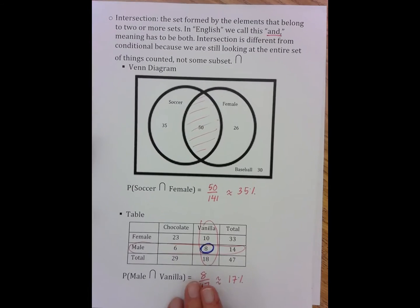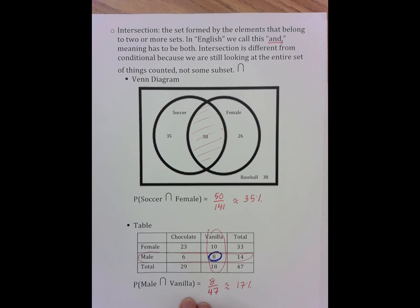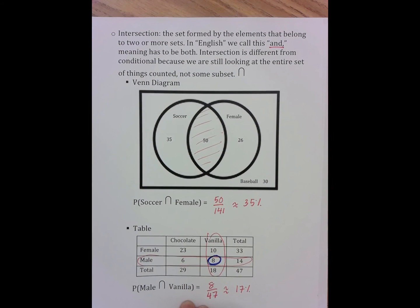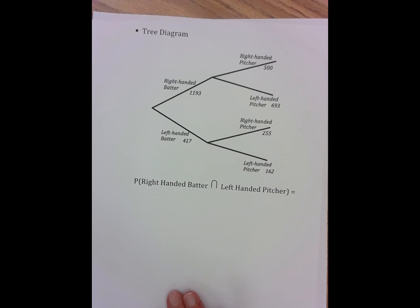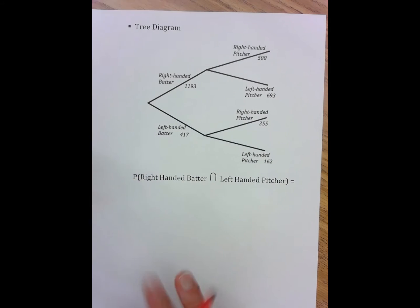So in both the Venn diagram and the table, it's relatively easy to see the overlap. It sits right there. You can see the coloring in, it's right in front of you. In the tree diagram, it's a little bit harder to see that overlap.